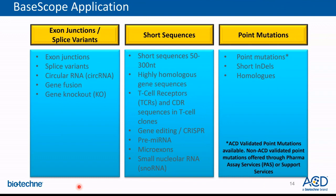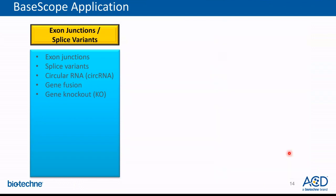Short target sequence probes are designed to detect sequences between 50 to 300 nucleotides. They can detect highly homologous sequences, sequences like CDR3 regions on T cell receptors, precursor microRNAs, nucleolar RNAs, and are useful for verifying CRISPR-mediated gene editing. These probes tend to be about 1 to 3 ZZ pairs or longer in length. Our third application is point mutation detection. We have validated an extensive list of point mutation probes in-house at ACD, which detect specific and sensitive point mutations in cells and tissue samples.